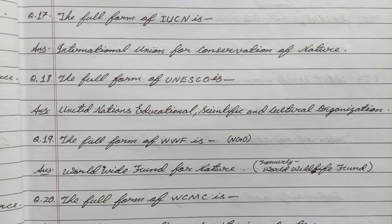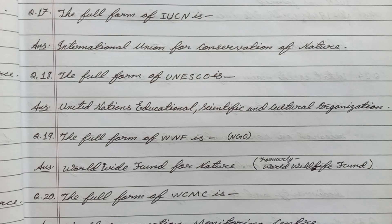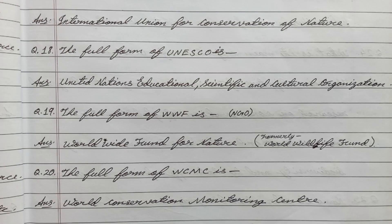Question number eighteen: The full form of UNESCO is - answer: United Nations Educational, Scientific and Cultural Organization. Question number nineteen: The full form of WWF is - answer: Worldwide Fund for Nature. Question number twenty: The full form of WCMC is - answer: World Conservation Monitoring Centre.